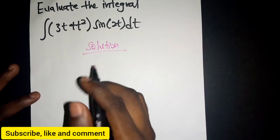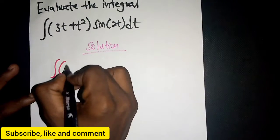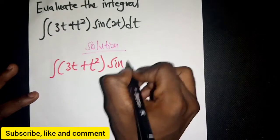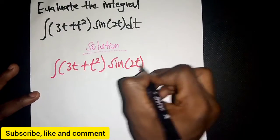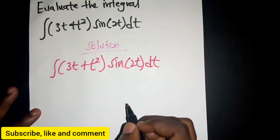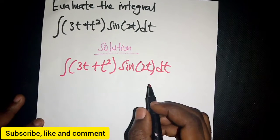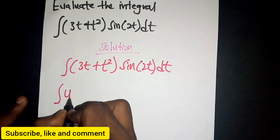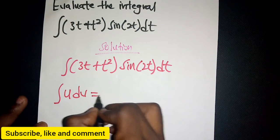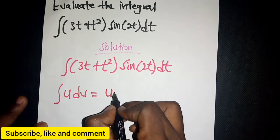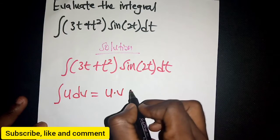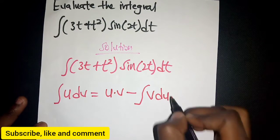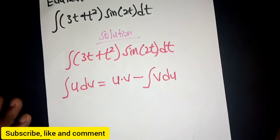We have the integral of (3t + t²)·sine(2t) dt. We want to use integration by parts. The formula is given by: integral of u dv = u·v minus integral of v du.